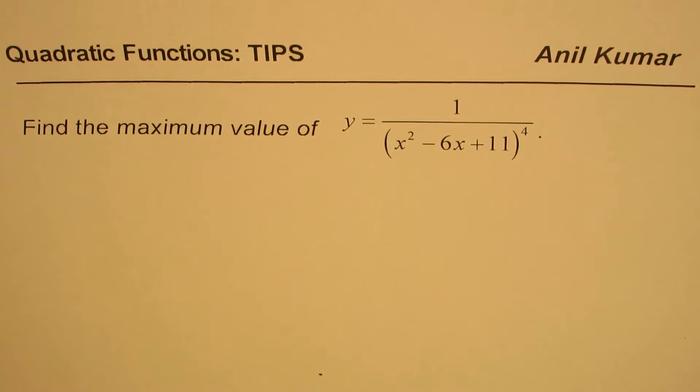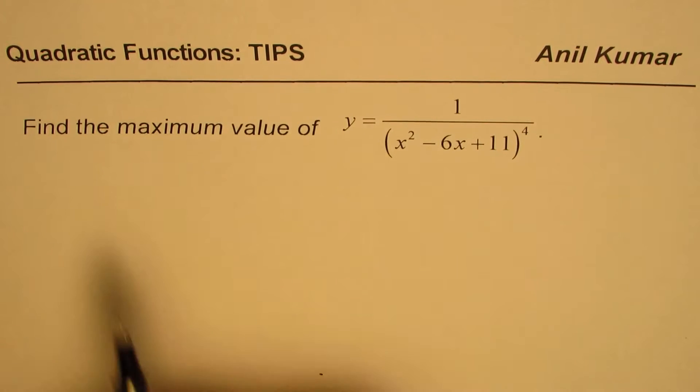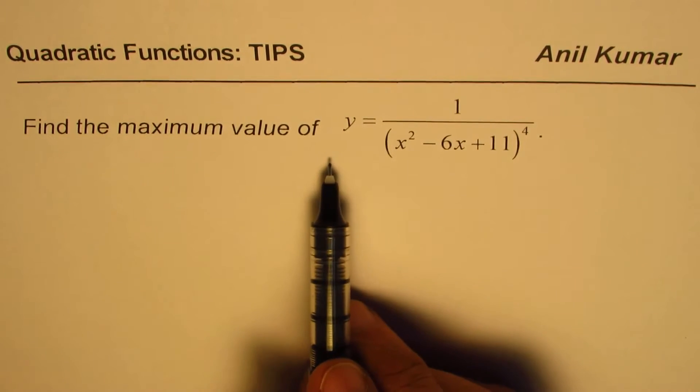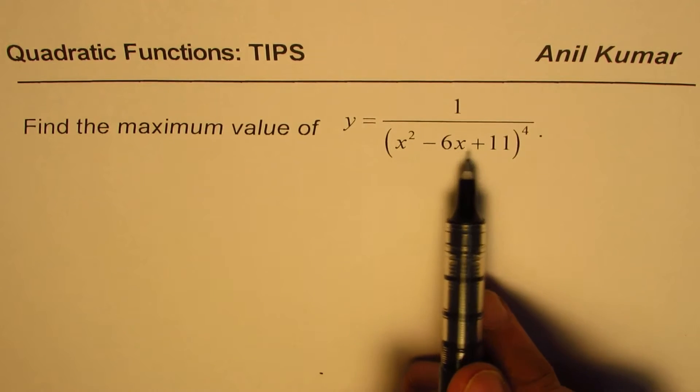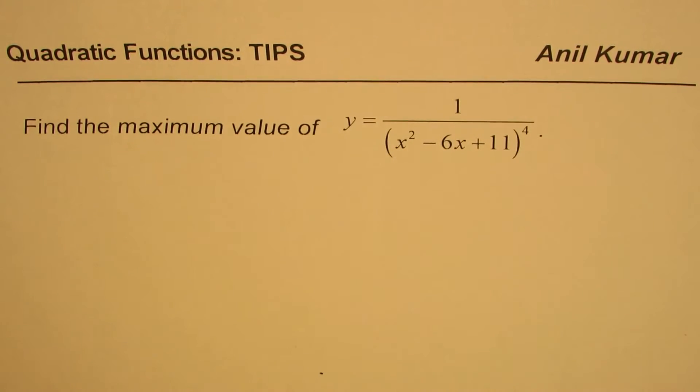I'm Anil Kumar sharing with you a thinking question on quadratic function. The question here is, find the maximum value of y equals to 1 divided by x squared minus 6x plus 11 to the power of 4.